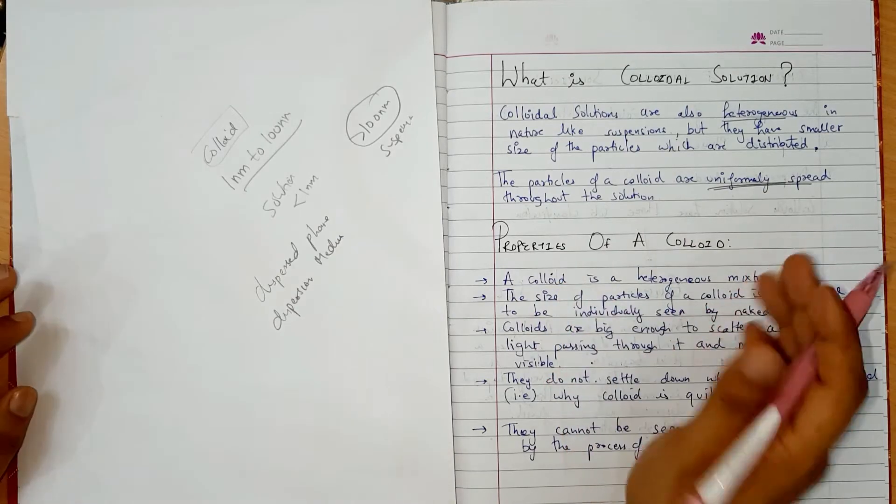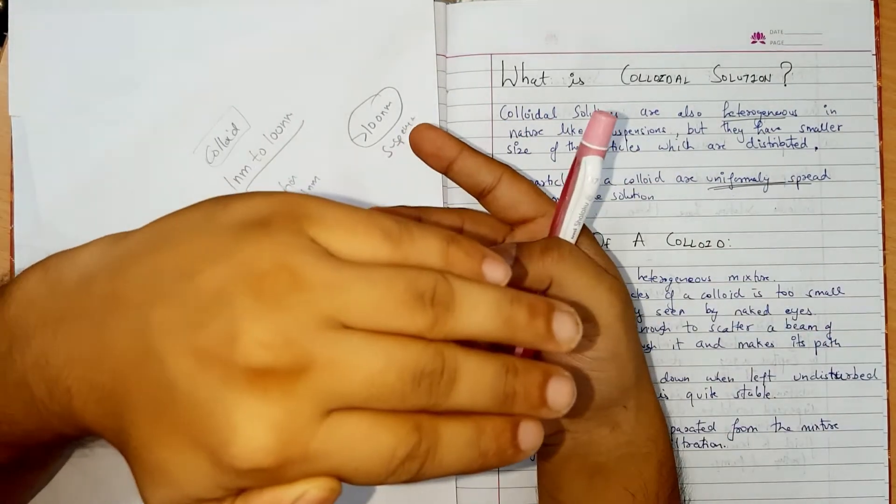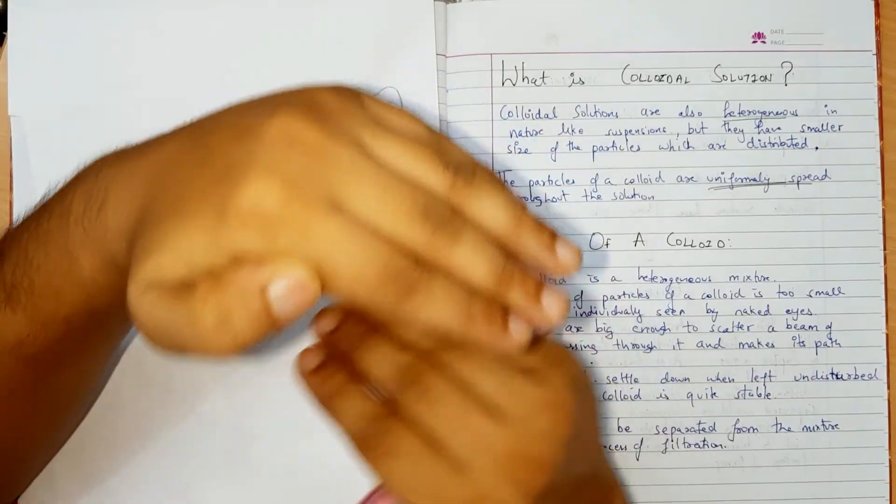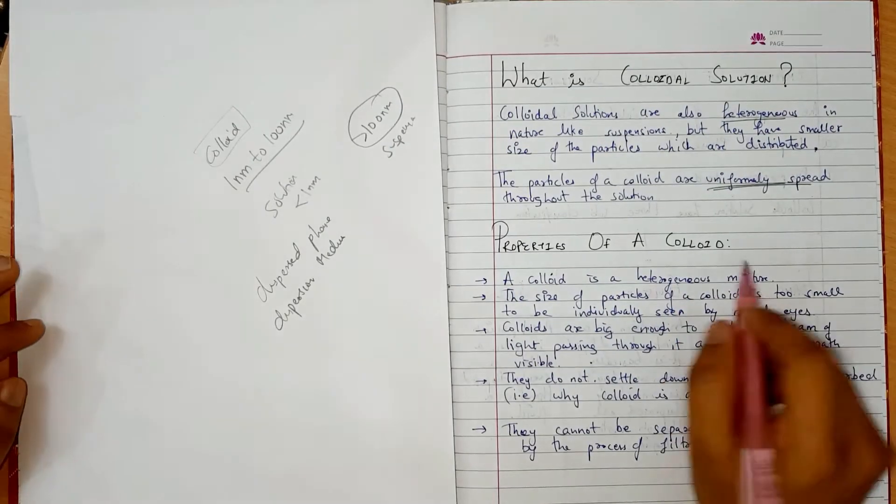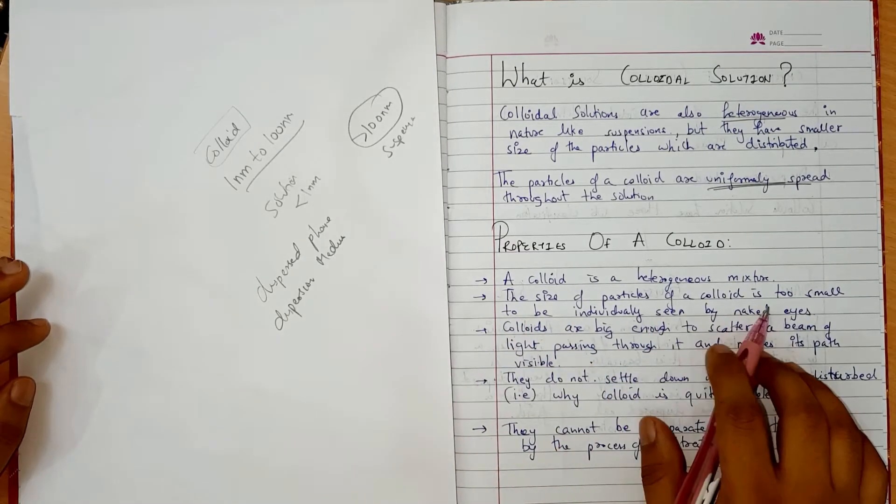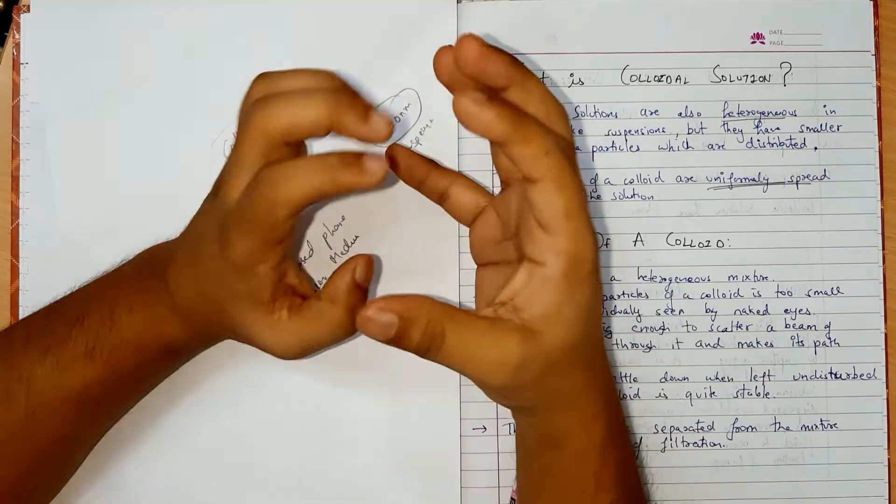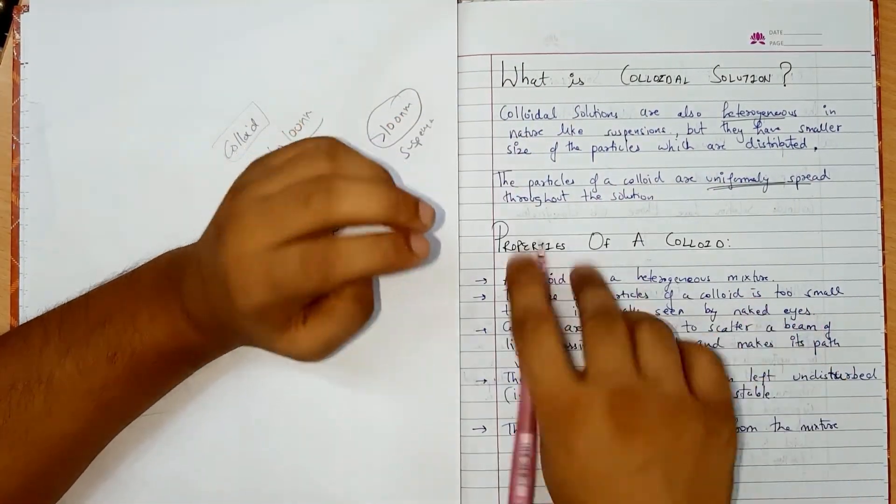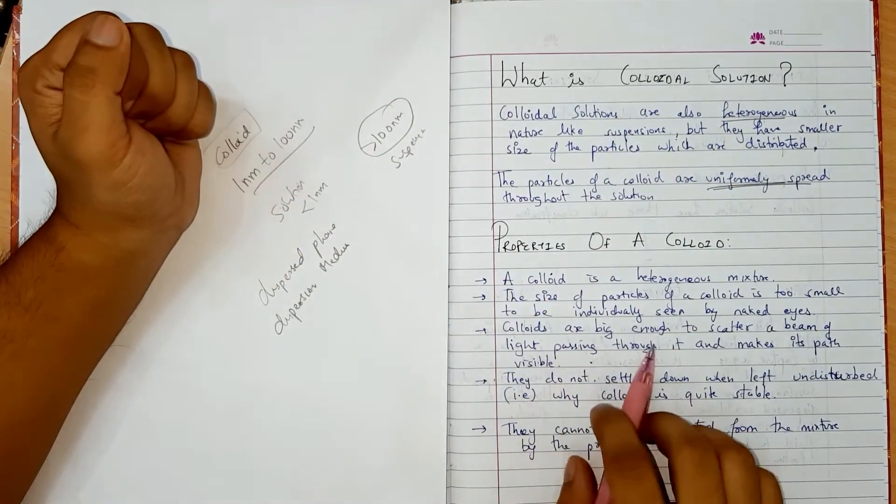Now we have to read properties. First point, it is a heterogeneous mixture. Why? Because it is a two phase system. One will be dispersed phase, one will be dispersed medium. Next, the size of the particle of the colloid is too small to be individually seen by naked eyes.